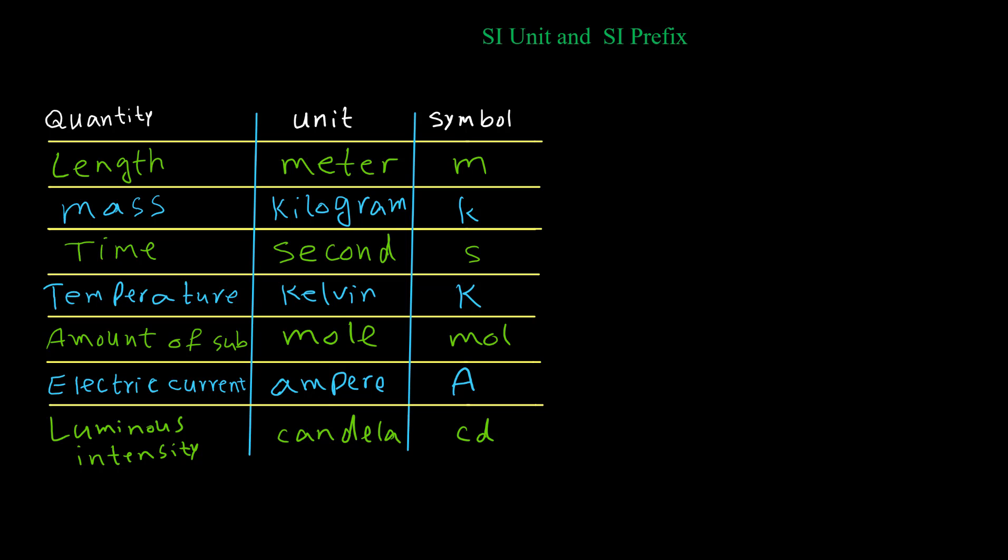All other units in physics, chemistry, and other science majors are built based on these seven units. For example, if you want to calculate area for a square or for a rectangle, we multiply x times y or x times x. So if you want to calculate the SI units for area, we should have length times length. The unit for length is meter, so meter times meter is equal to meter squared. So the SI unit for area is meter squared.